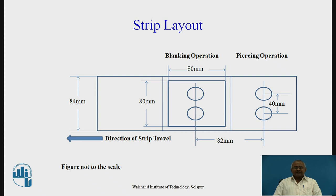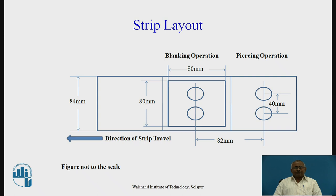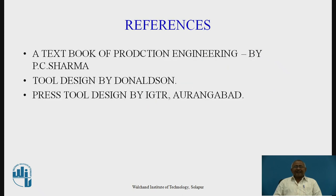This operation is performed automatically with no requirement for manual positioning of the strip stock — it is automatically positioned. The strip holder holds the strip positively, and after every operation it is lifted up. When the strip advances by a distance equal to the pitch, it falls down again and holds the strip in position for the next operation. This happens during every stroke. The strip layout helps you understand the design of a progressive die. In this session, we will stop here. For further reading, refer to the textbook of Production Engineering by P.C. Sharma, Tool Design by Donaldson, and Press Tool Design by IJTR Aurangabad. Thank you.